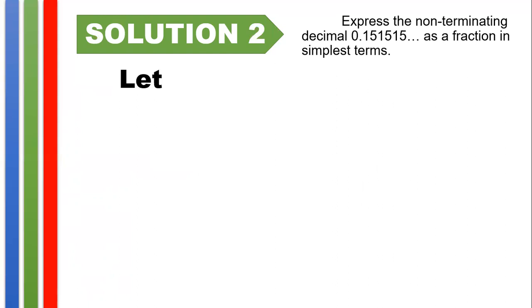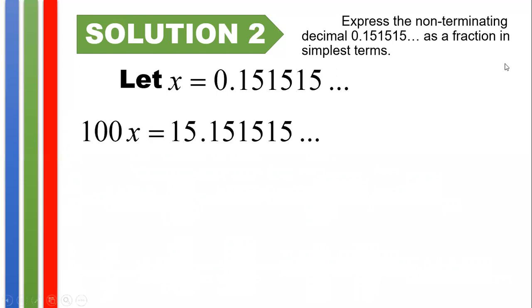But let us have another solution. Let's have solution 2 for this. Let's say we don't know the value of this decimal. So let x be equal to that non-terminating but repeating decimal. So we could see that since there are two digits being repeated, multiplying both sides by 100 moves a decimal point two places going to the right. So, multiplying both sides by 100, x times 100, we have 100x.